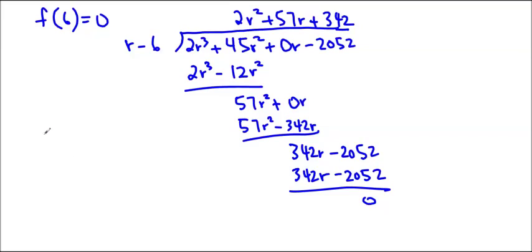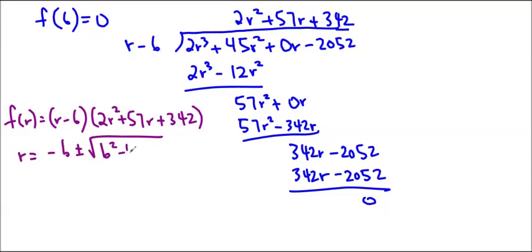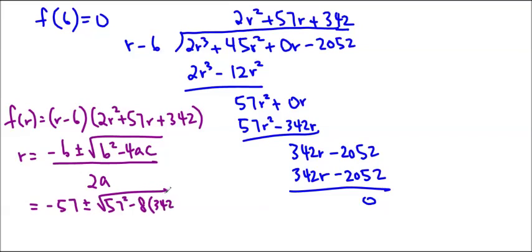And so we'll write our f of r in factored form. f of r is going to equal r minus 6 times 2r² plus 57r plus 342. This is a really big number, so I'm not going to spend too much time thinking about how to factor it. I'm just going to jump straight to quadratic formula. Again, make sure you use r here and not x, because there is no x involved. So r equals negative b plus minus square root b² minus 4ac. Always write out your formula. And then you just have to substitute all of the numbers in. 57² minus 4 times 2 is 8 times 342. You can just type it into your calculator. And you should get that r is equal to negative 57 plus minus 22.6 over 4.